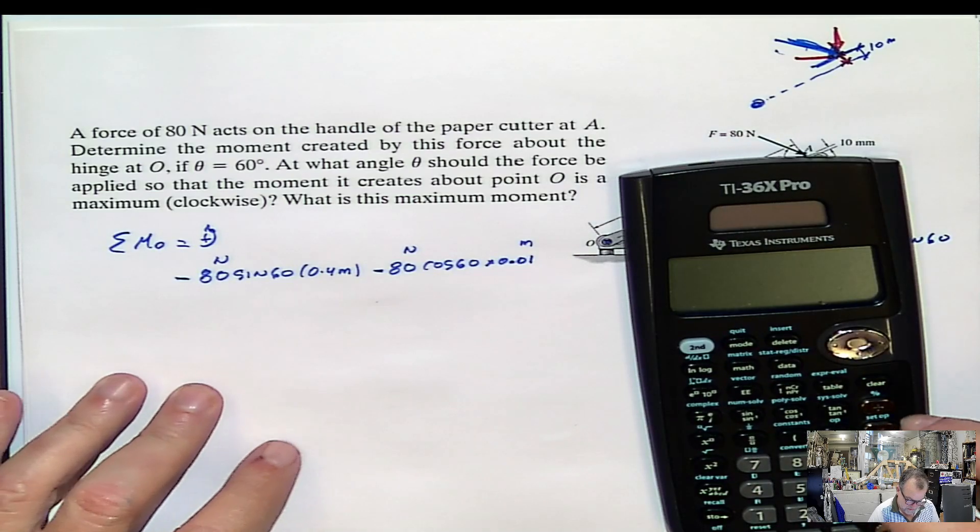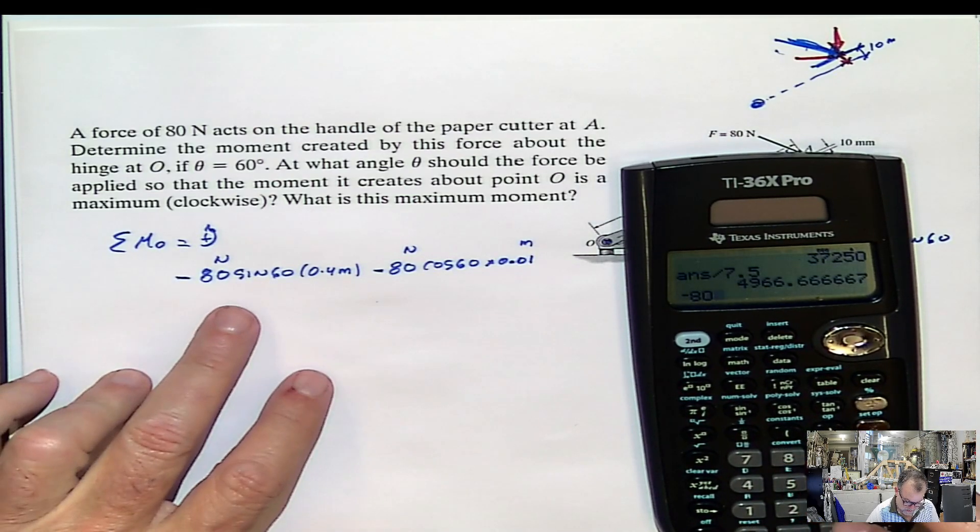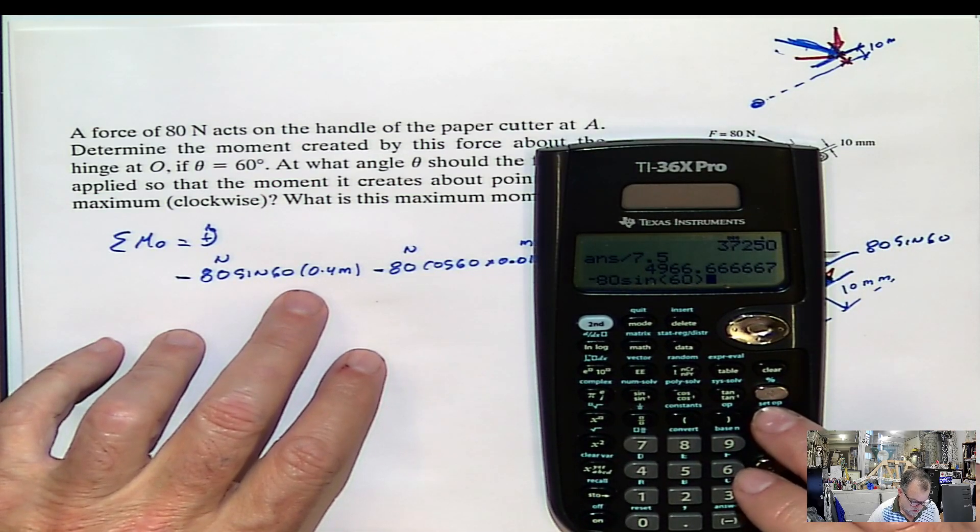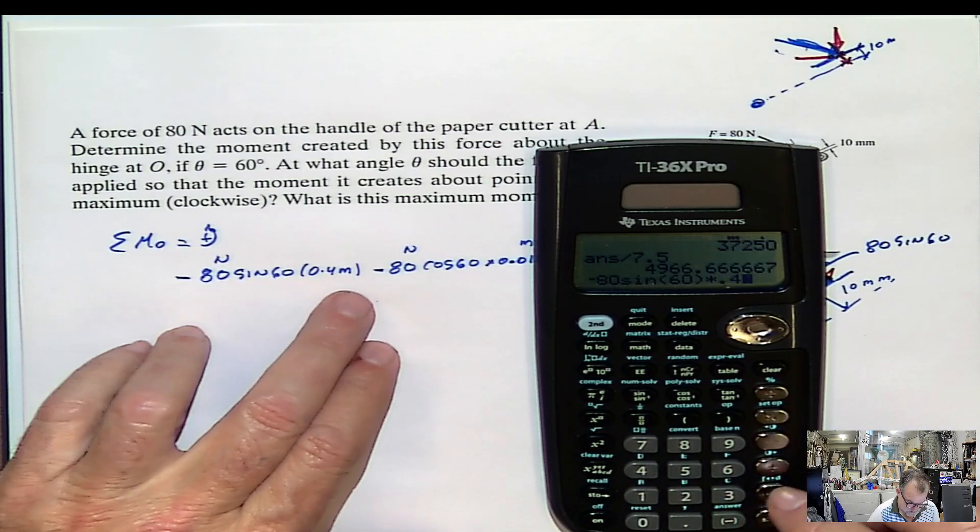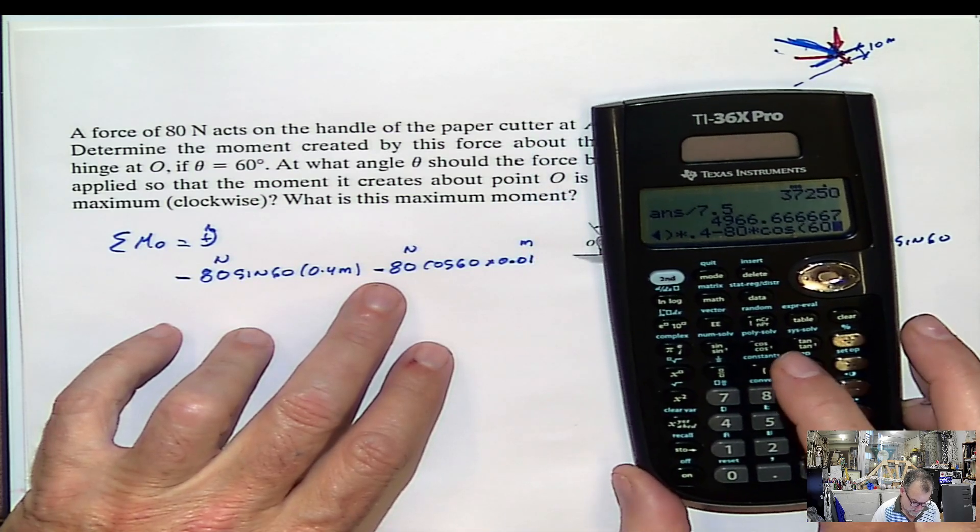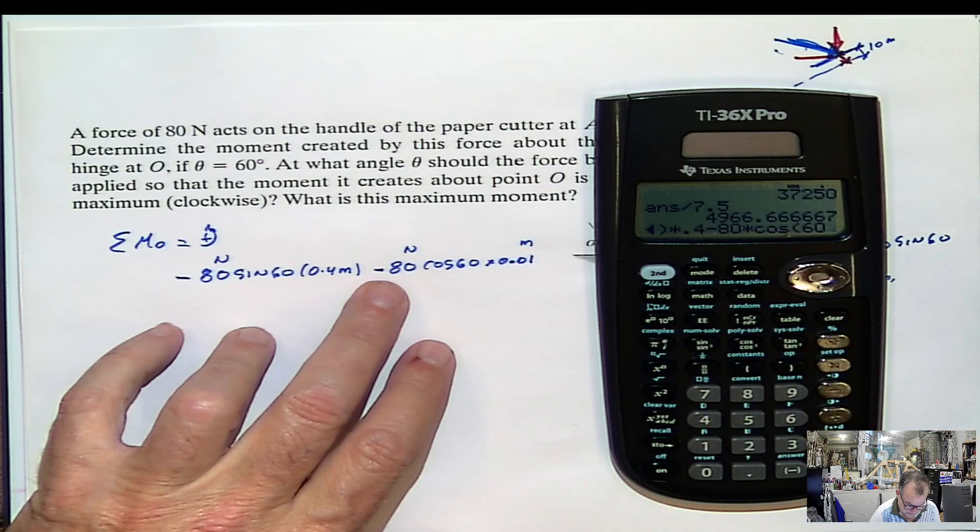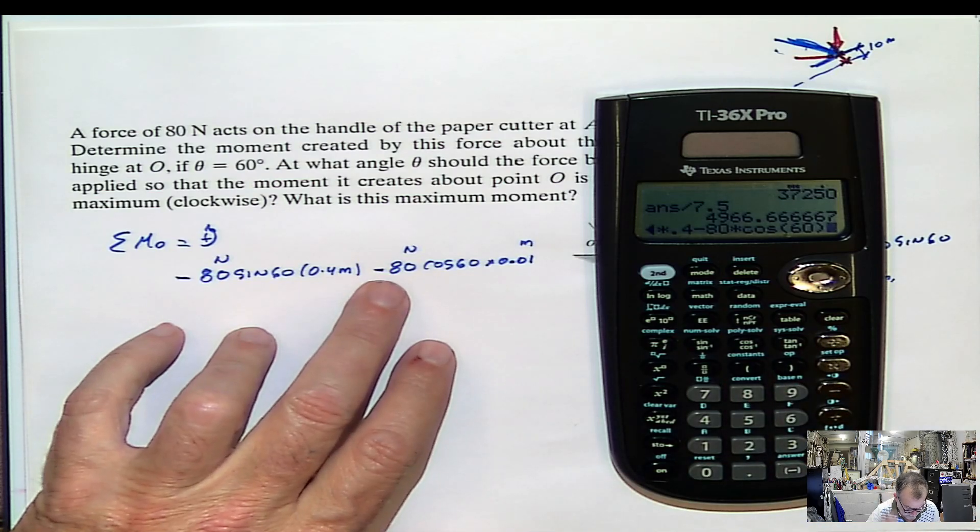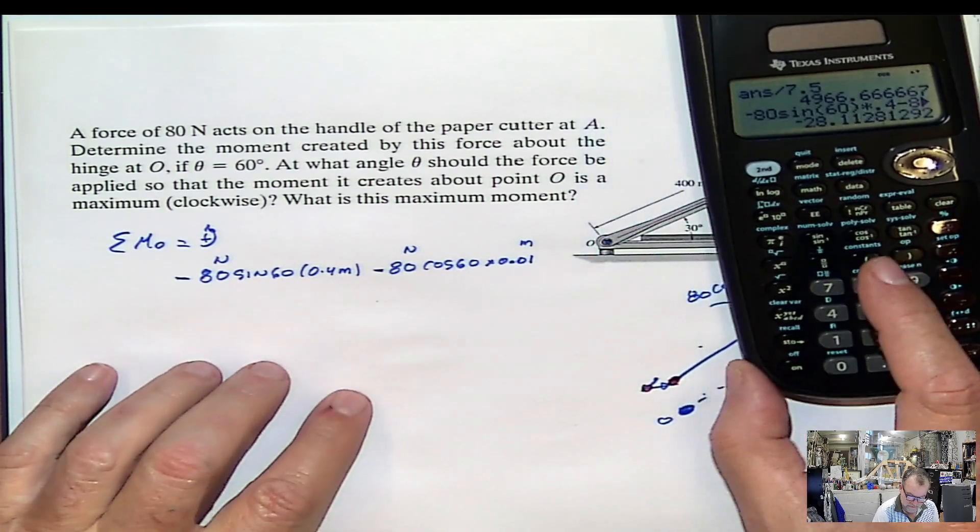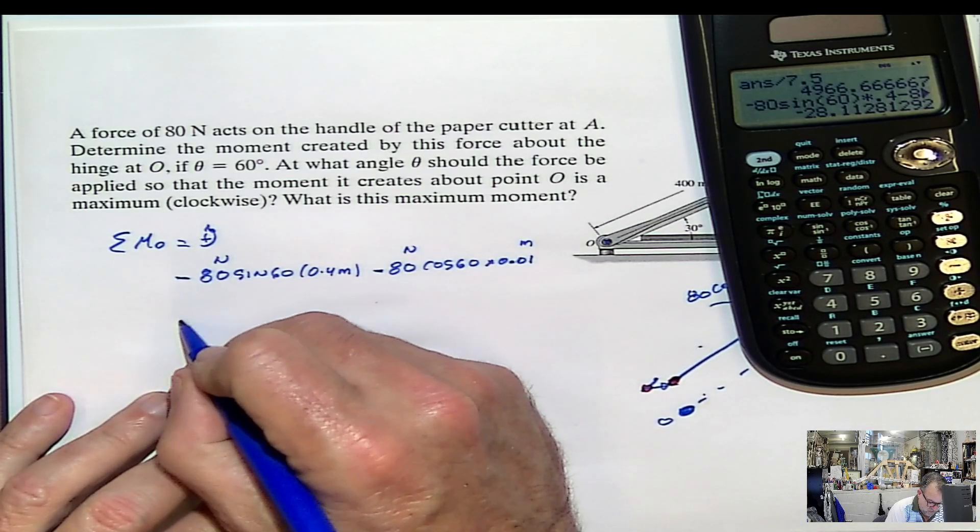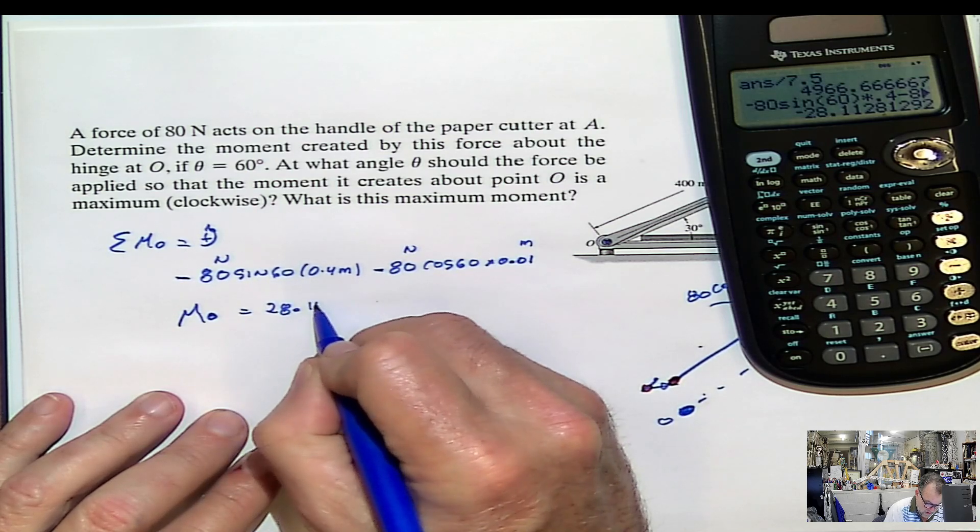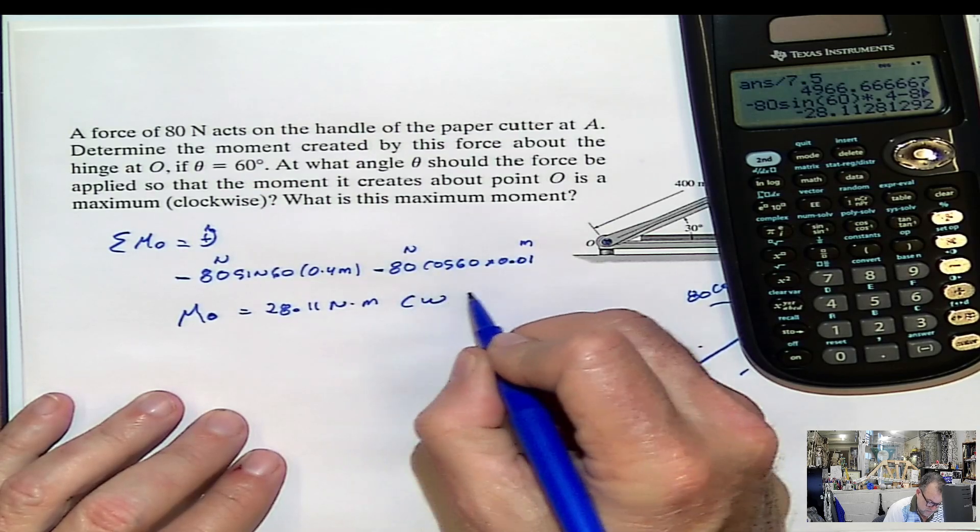How much will this be? It's going to be negative 80 sine 60, that has to be really close to 90 degrees but not 90 degrees, times 0.4 minus 80 times cosine 60. I mean, the angle is 60, so I'm going to be really close to nothing. I was thinking already in the other part, times 0.01. That would be 28.11 negative. So that would be negative 28, and summation of moments at O under the given conditions would be 28.11 newton meter clockwise. That would be the answer for the first one.